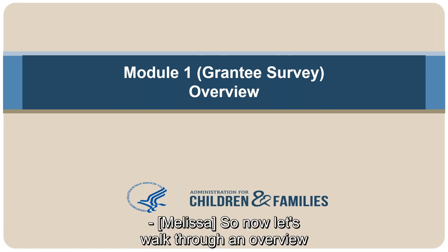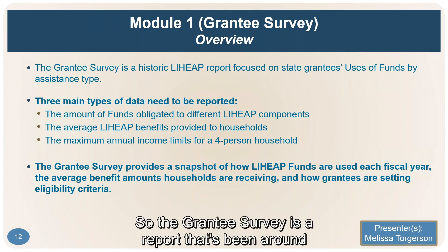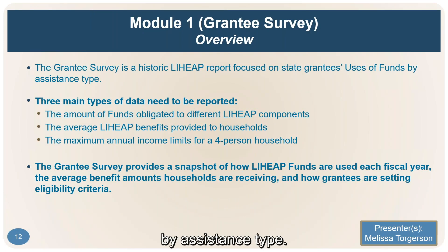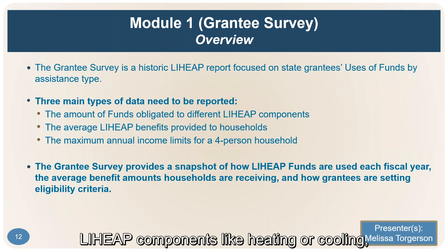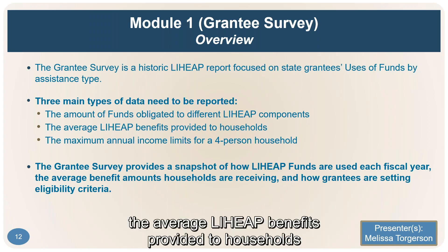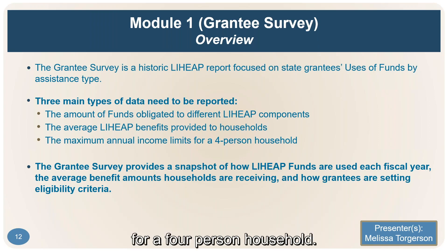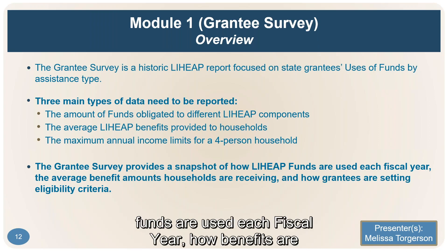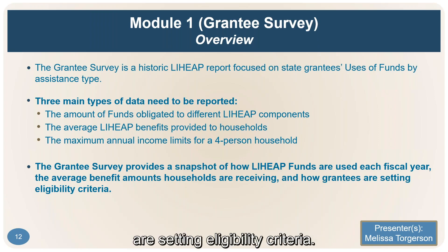The Grantee Survey is a report that's been around a while, and it focuses on grantees' uses of funds by assistance type. There are three types of data that need to be reported: the amount of funds obligated to different LIHEAP components like heating or cooling, the average LIHEAP benefits provided to households, and the maximum annual income limits for a four-person household. The Grantee Survey provides a snapshot of how LIHEAP funds are used each fiscal year, how benefits are distributed, and how grantees are setting eligibility criteria.